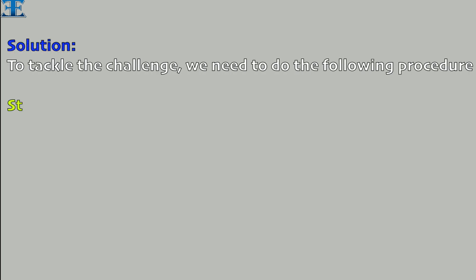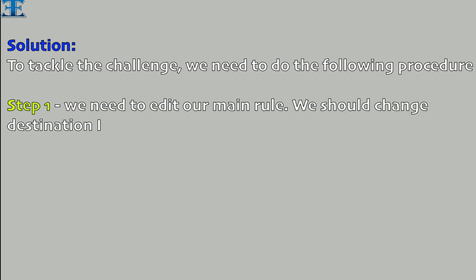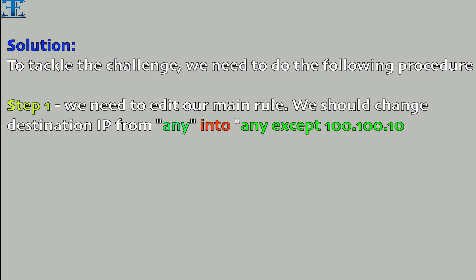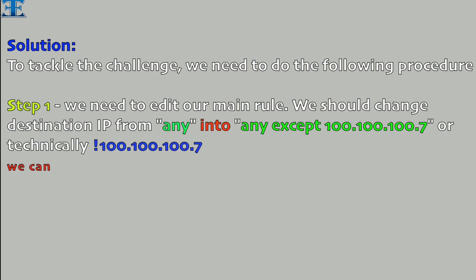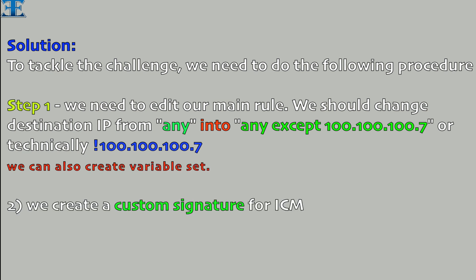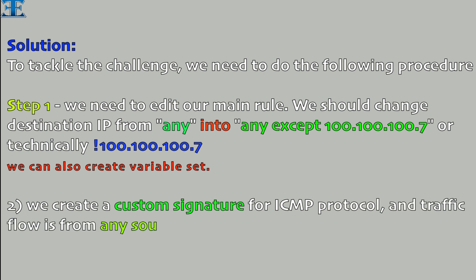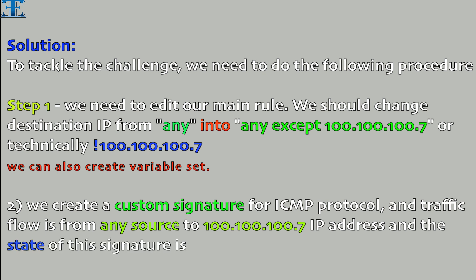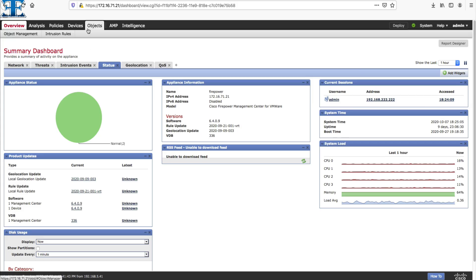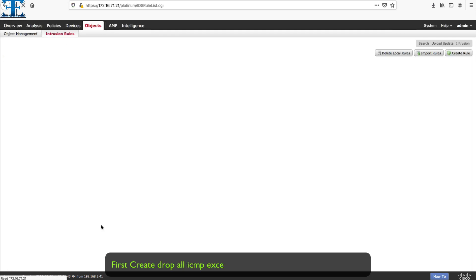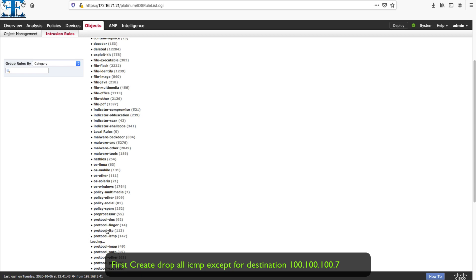Now we should talk about our solution. To tackle the challenge, we need to do the following procedure. Step 1: change our main signature — change the destination IP from any to any except 100.100.107; we can also create a variable set. Step 2: create a custom signature for ICMP protocol where traffic flows from any source to 100.100.107, and the state of the signature should be generate event. Let's go to the lab and do the configuration.